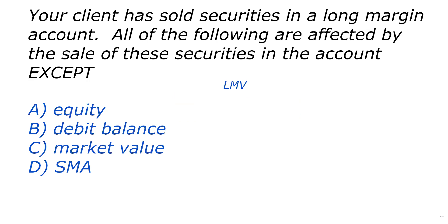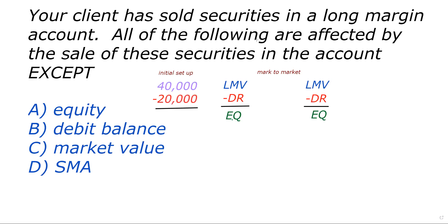So let's just review. The customer has a long margin account, he sold securities. All the following are affected except — we shouldn't try to do this in your head, you should make up your own illustration, and you should definitely know the classical margin equation. We made up a margin account that was perfectly balanced — $40,000 market value, $20,000 debit, $20,000 equity. We sold $10,000 worth of securities and did a mark-to-market. Market value went from $40,000 to $30,000. As a margin clerk, any money coming to your account pays down the loan — so now you owe the broker-dealer $10,000. You had $20,000 in equity; you still have $20,000 in equity. That is the answer to the question.